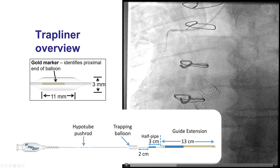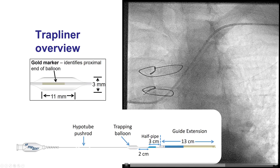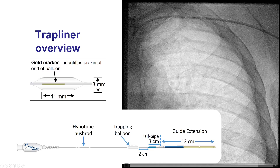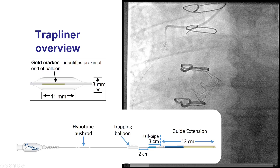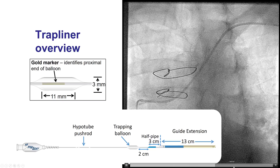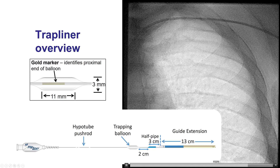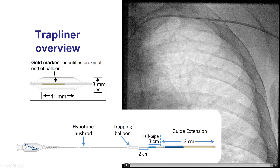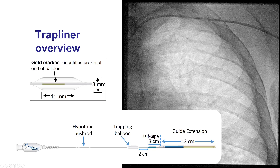The TrapLiner is similar to the GuideLiner. The differences are that the distal cylinder is short, which can be a problem as shown later. It has a trapping balloon located about 18 centimeters from the distal tip. When the proximal end of the TrapLiner balloon is inflated, it allows exchanges of equipment.